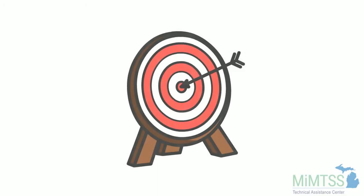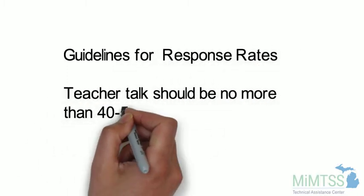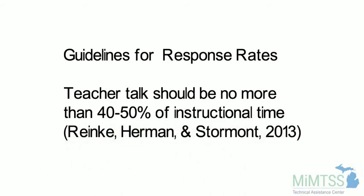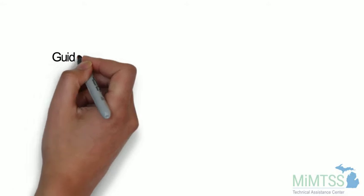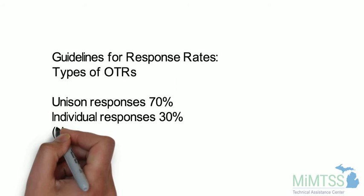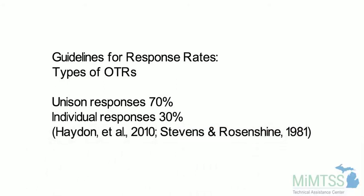So, if OTRs are important, what guidelines are there for the use of OTRs? Great question! First, teacher talk should be no more than 40 to 50 percent of instructional time. There has to be time and space for students to be actively engaged and responding. Next, we have to have a variety of both unison and individual responses. There has been research demonstrating that having 70 percent of OTRs be unison response and 30 percent being individual is the good recommendation.